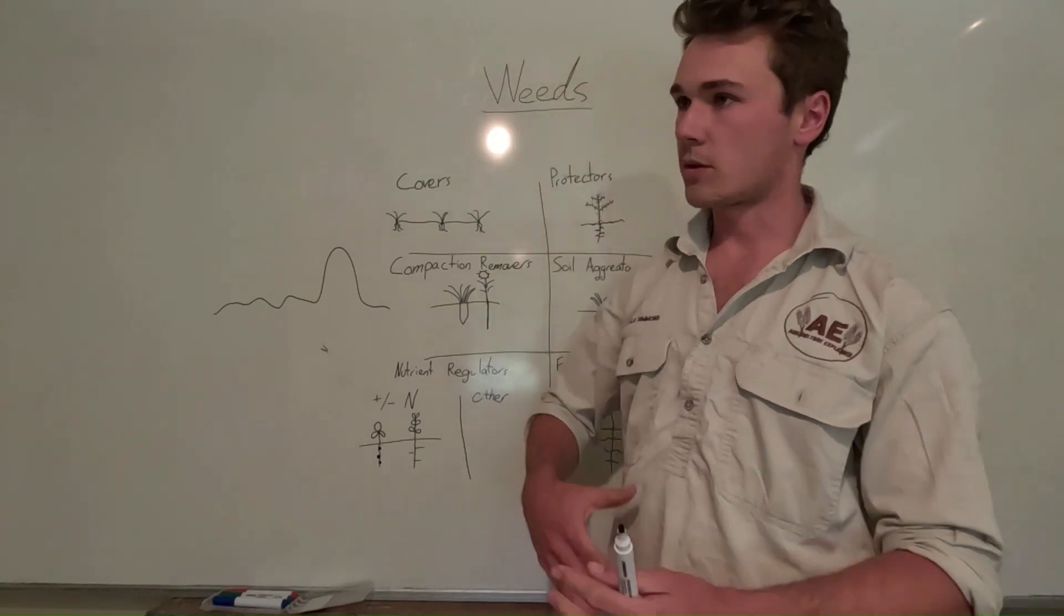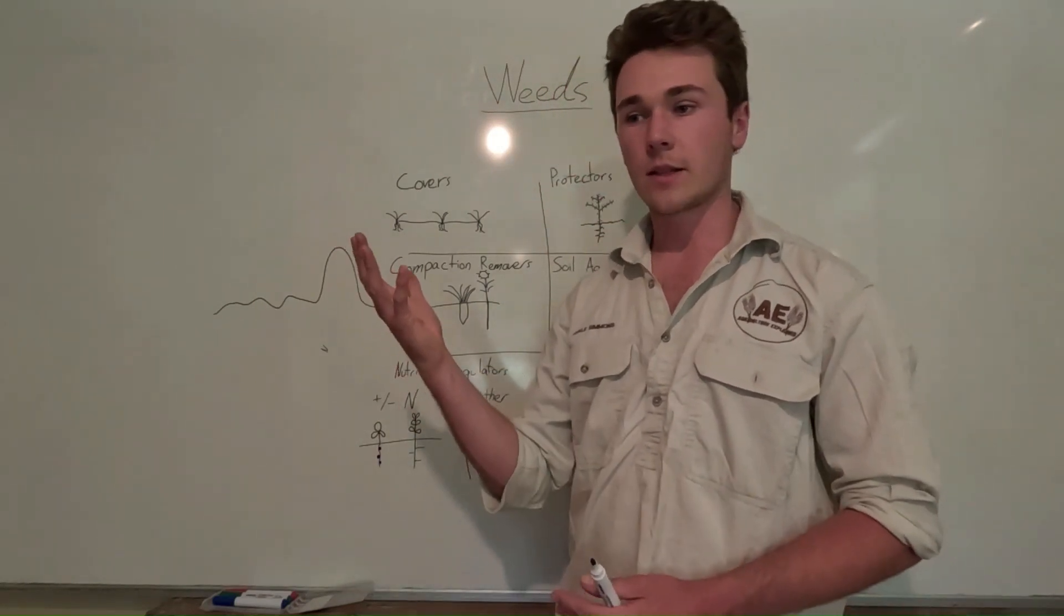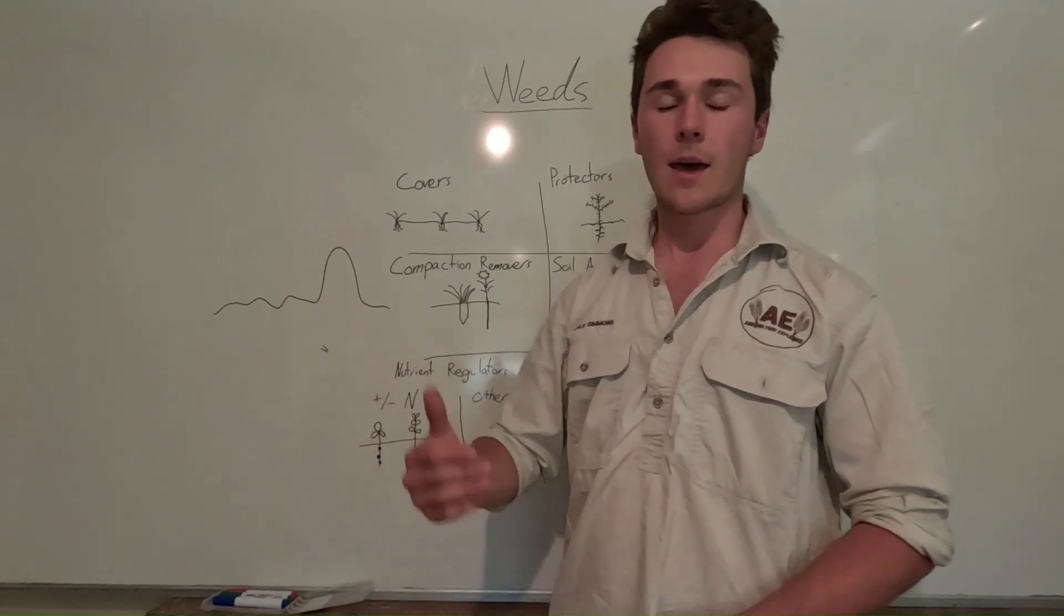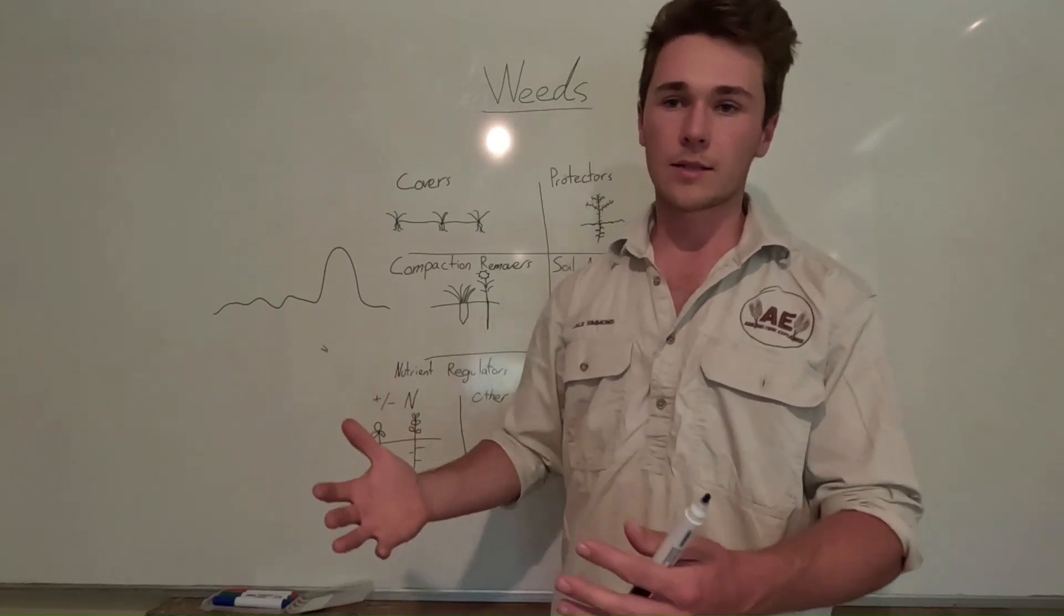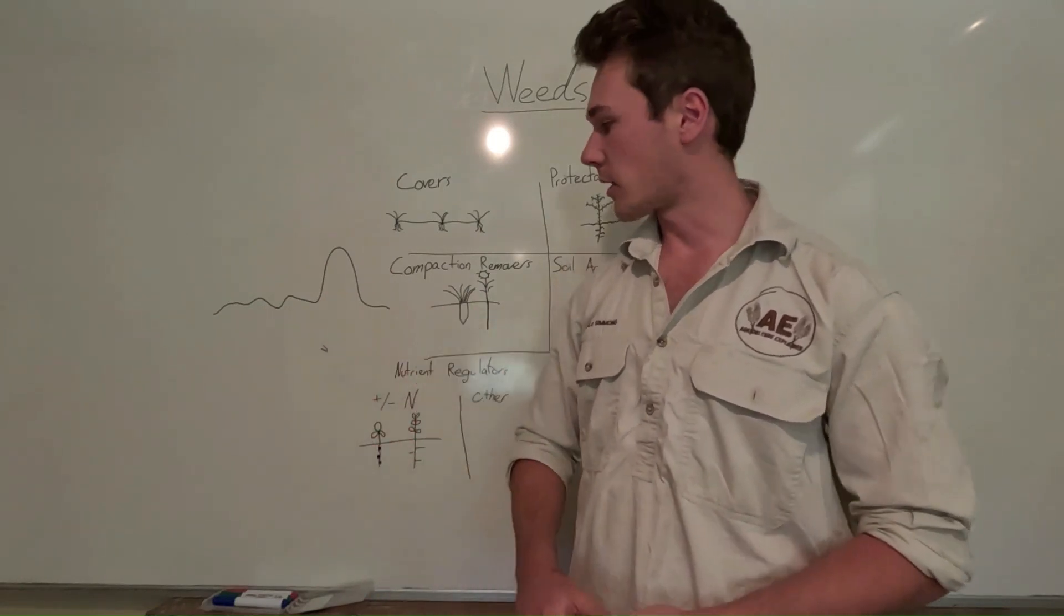In a similar way, if the soil is compacted, something like sunflowers, which have a deep taproot, are able to out-compete other plants that aren't able to push through that compaction layer.